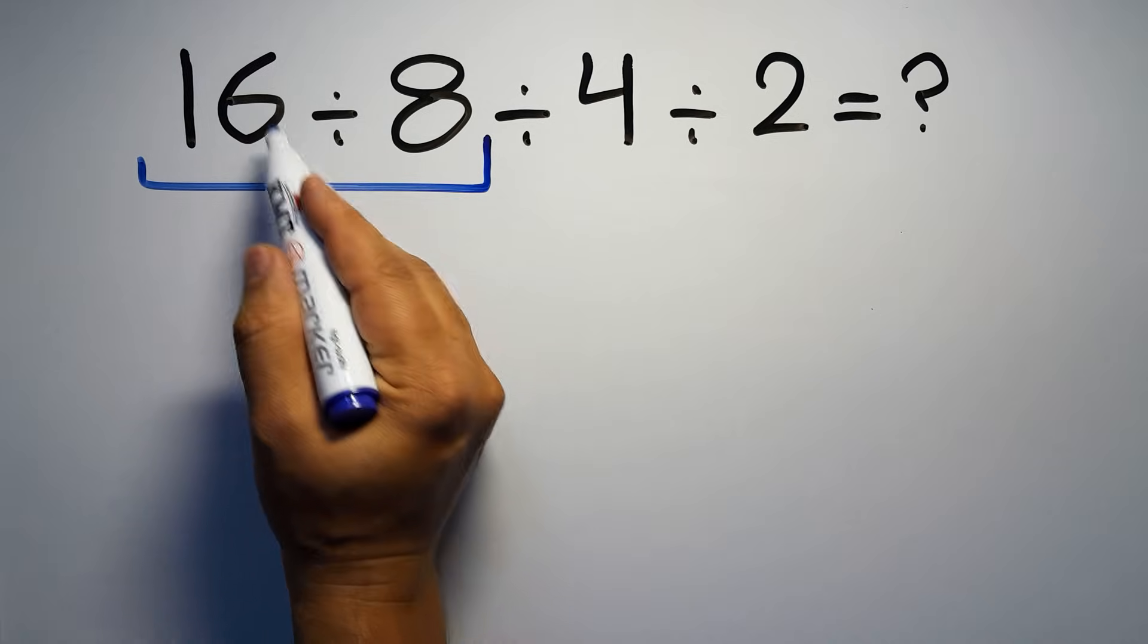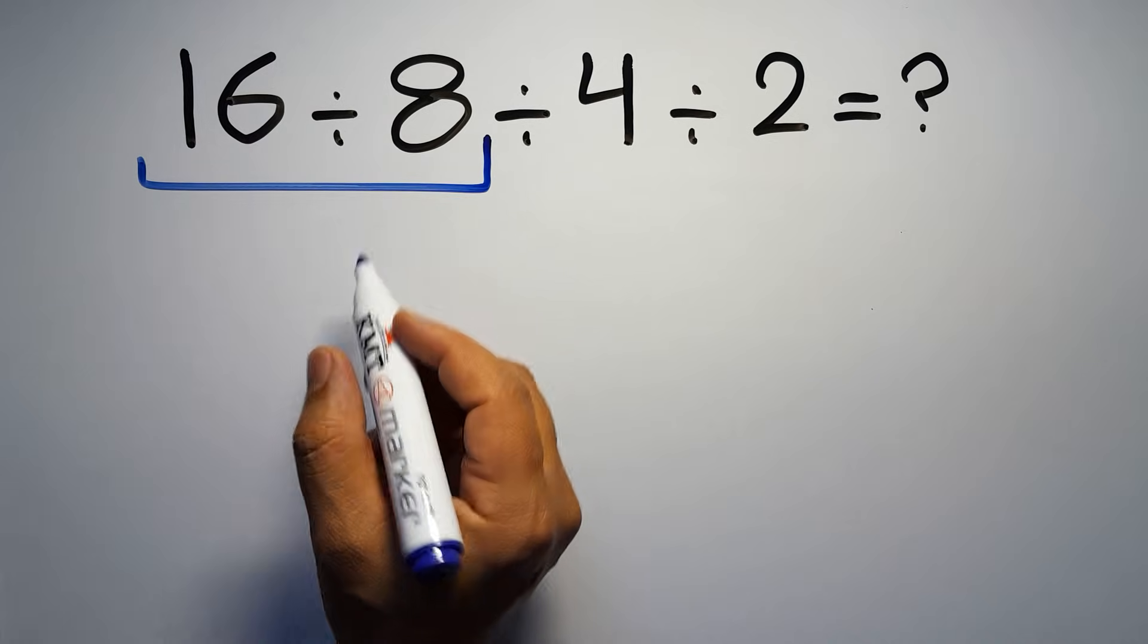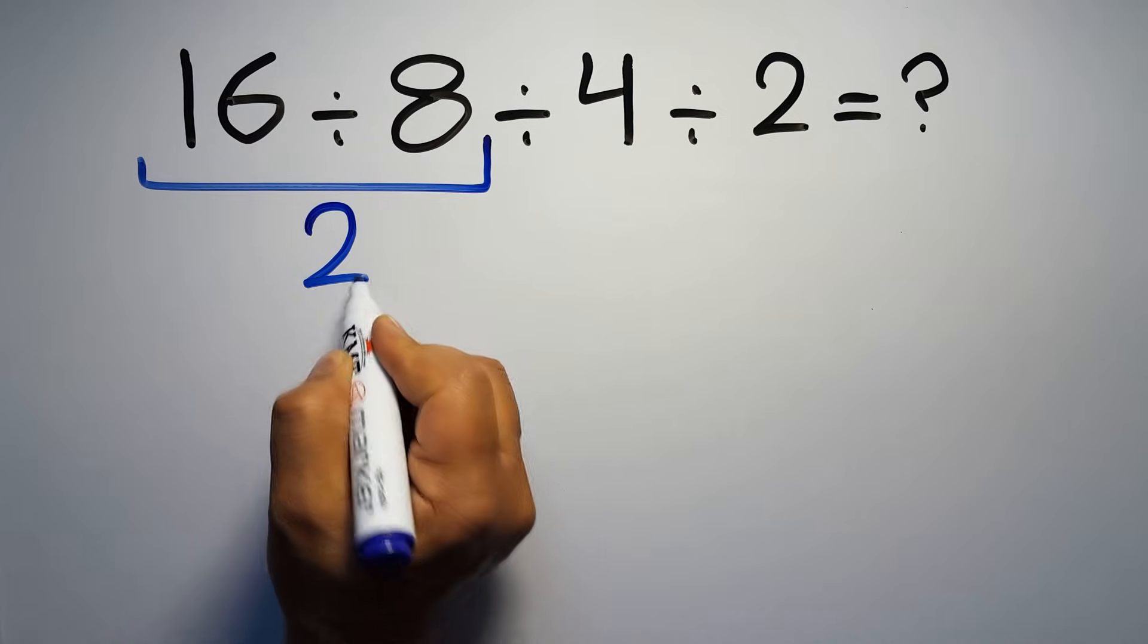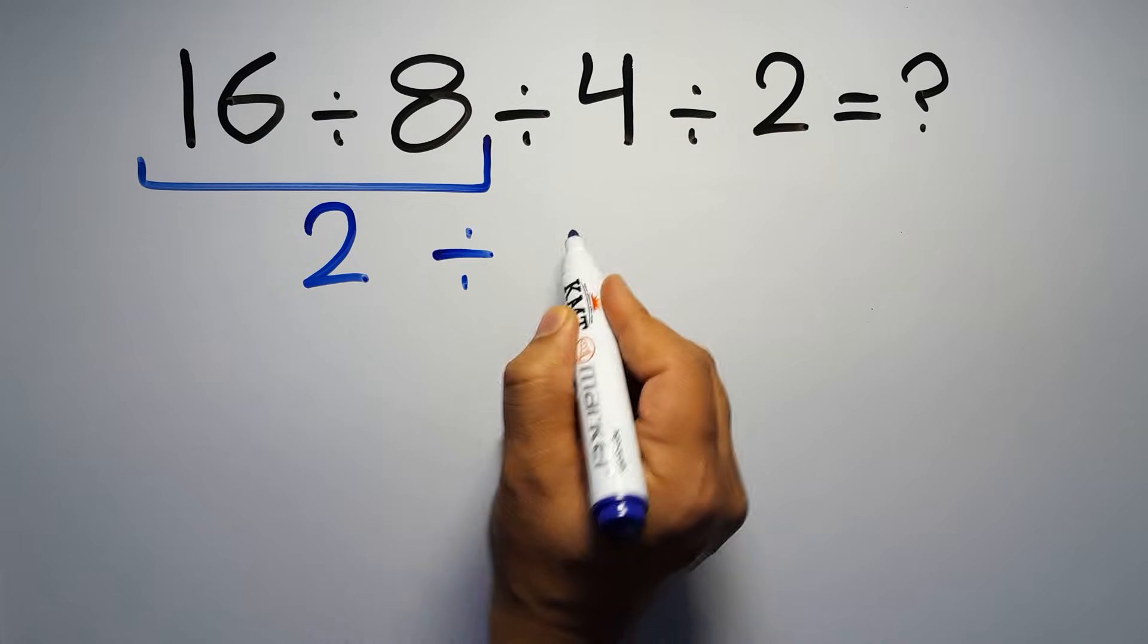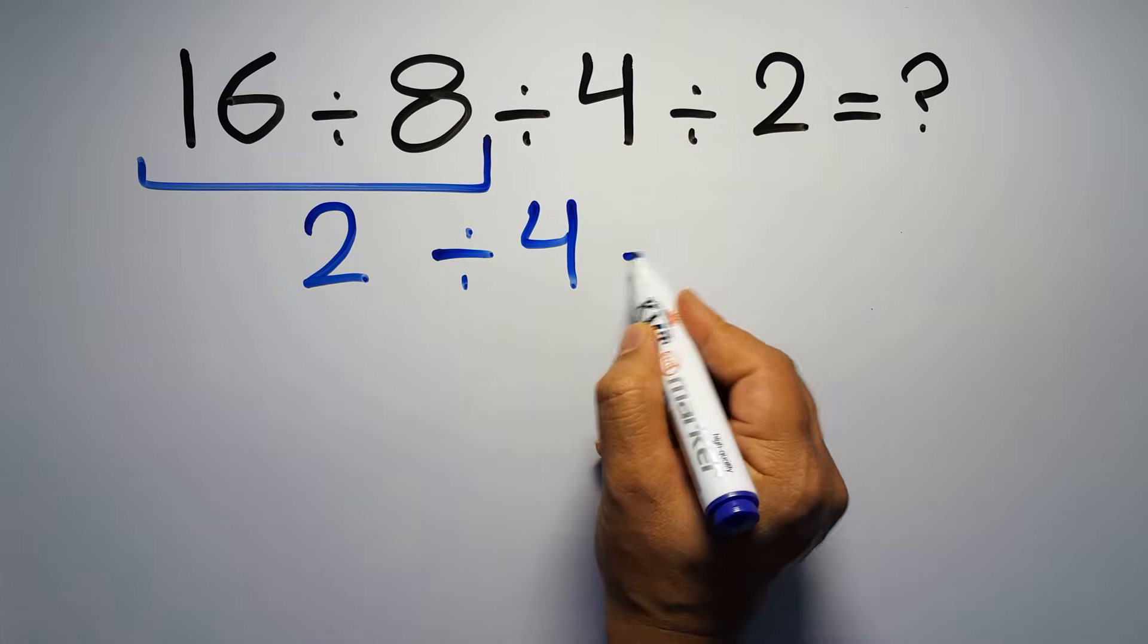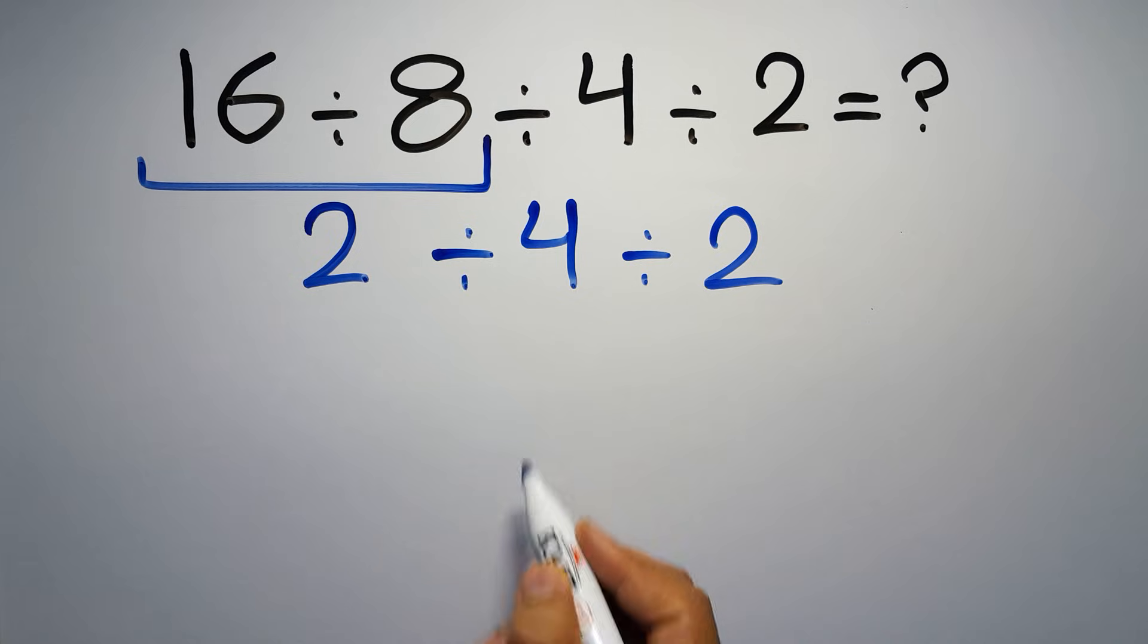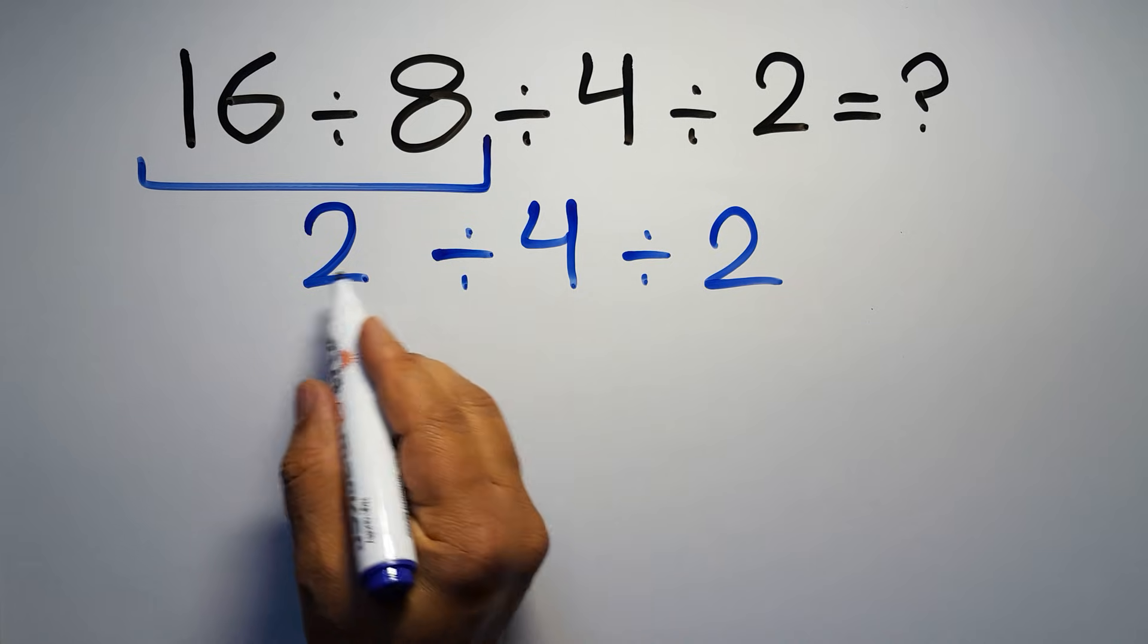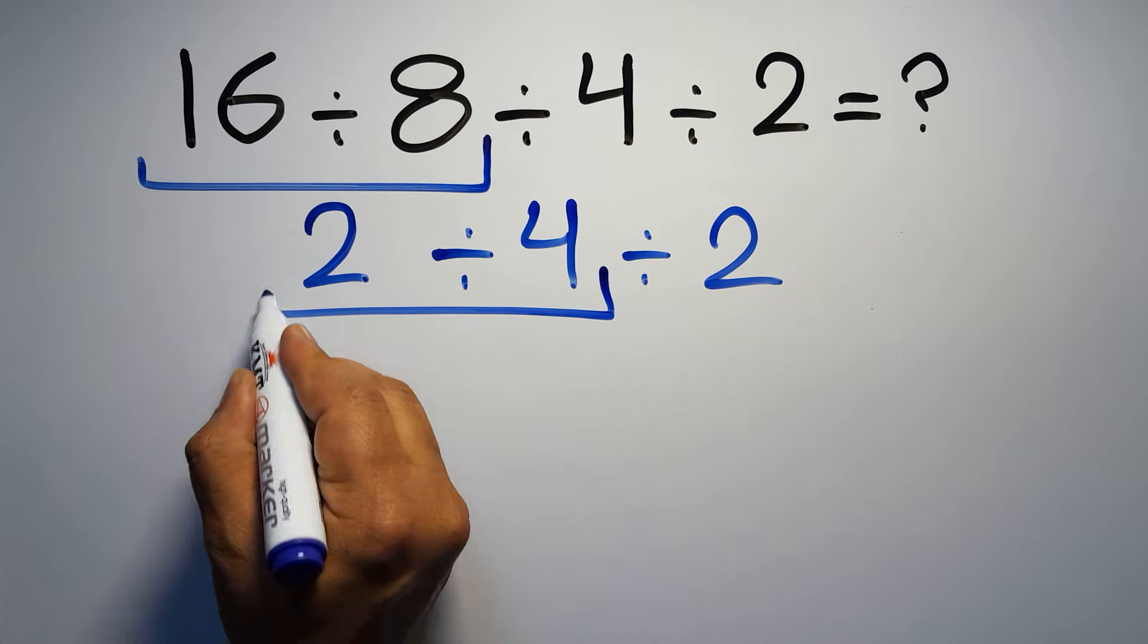So first we have to do this division: 16 divided by 8 is 2, so 2 divided by 4, divided by 2. Now we have to do this division. 2 divided by 4 can be written as